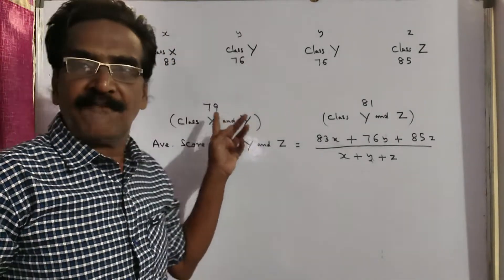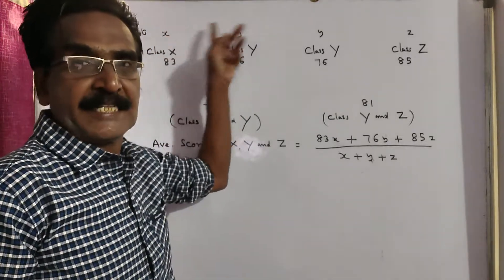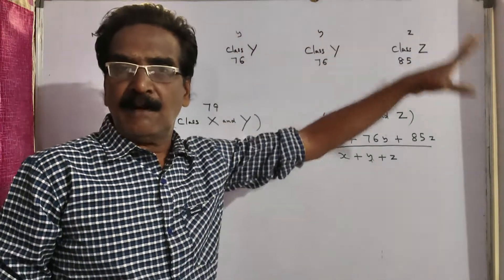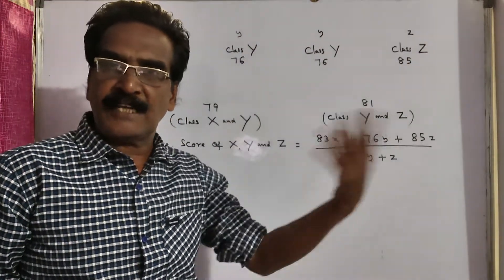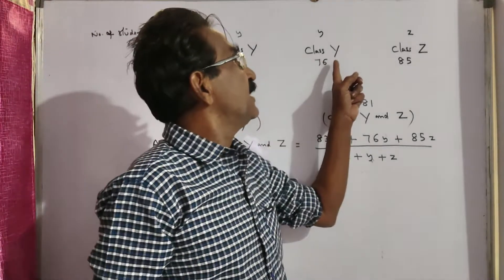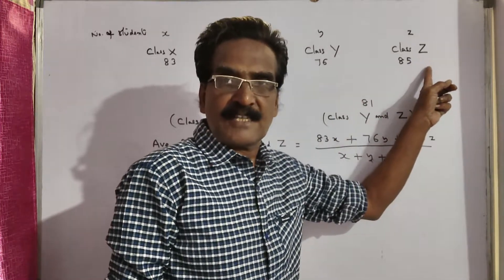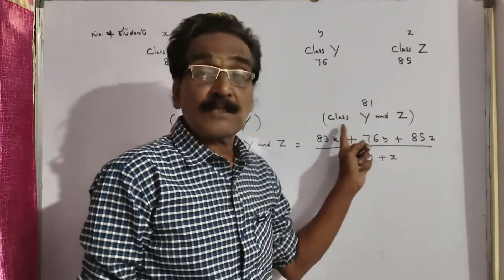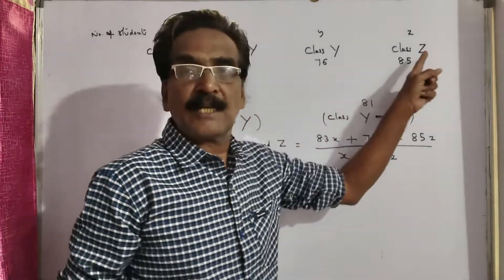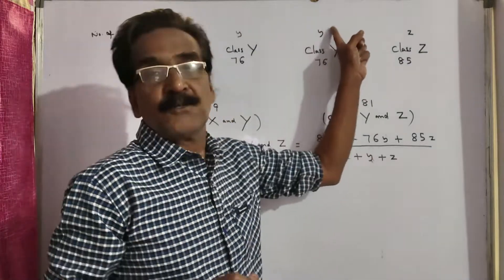You can apply the rule of allegation to get the ratio of the students of those two classes. Small x, small y, small z are the number of students of the respective classes X, Y and Z. In the same way, here we know the average score of class Y, average score of class Z, and the average score of class Y and Z combined. So here also you can apply the rule of allegation to get the students' ratio.